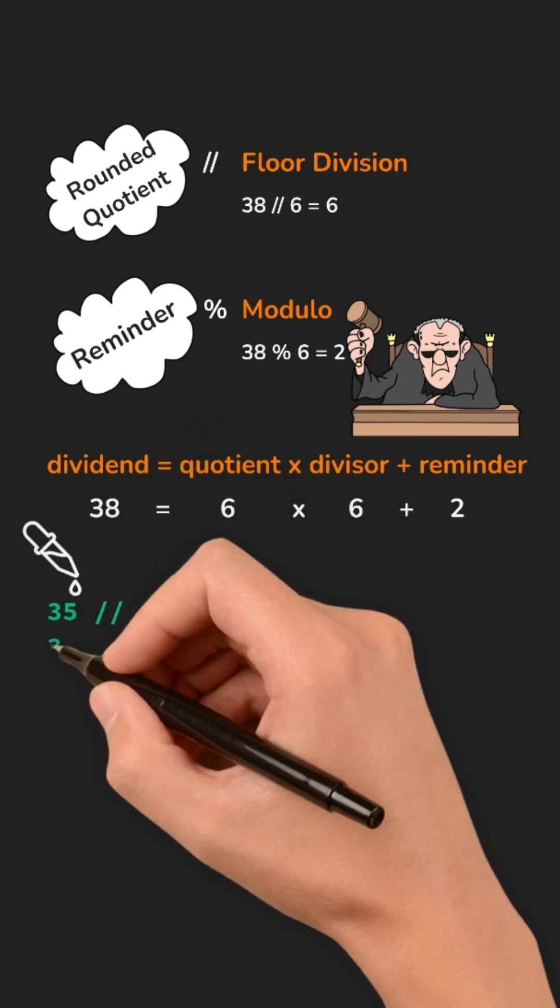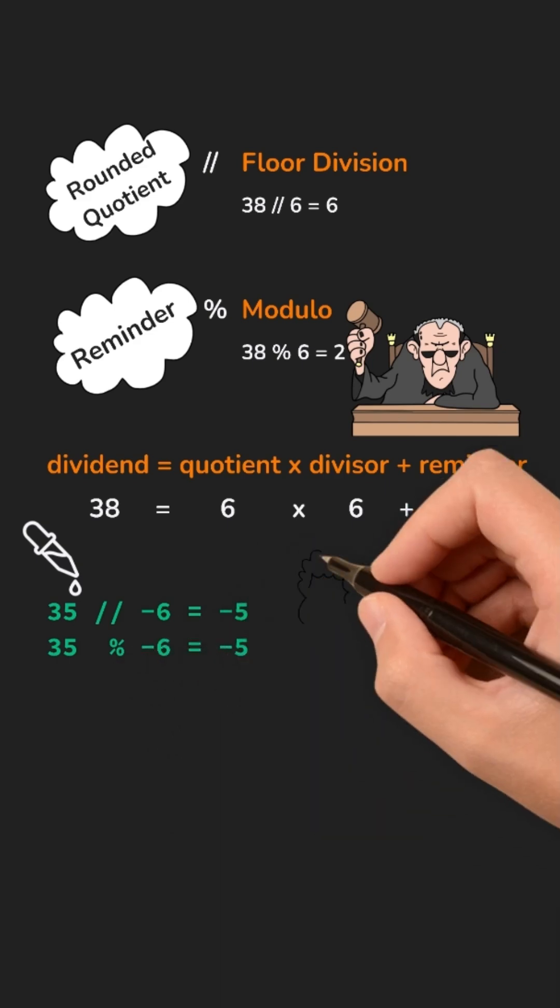Take 35 divided by -6. You might think that the quotient will be -5 and remainder will be -5, but it doesn't hold with the equation.